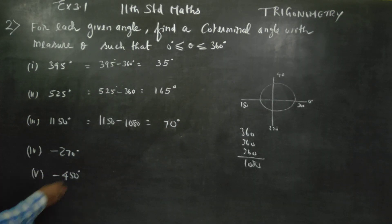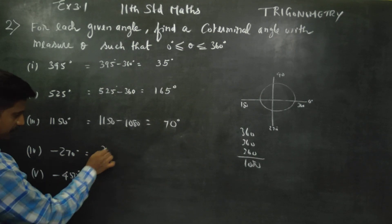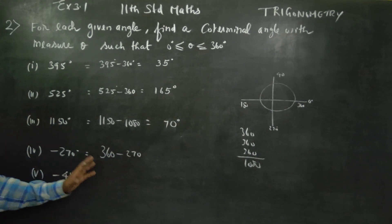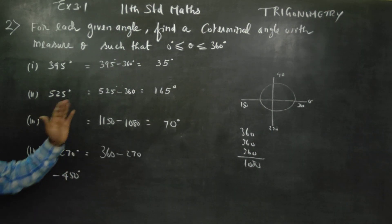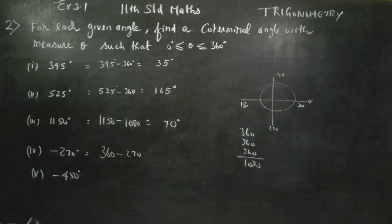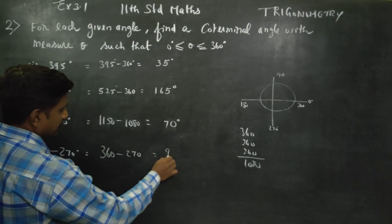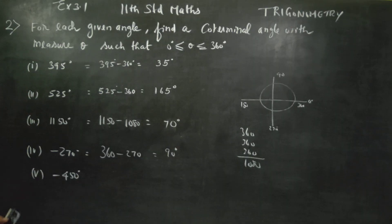For minus 270 degrees: since it is negative, you add 360. Minus 270 plus 360 gives you 90 degrees. So 90 degrees is your co-terminal angle answer.